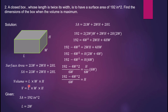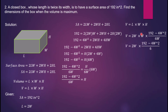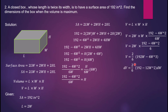Substitute the equivalent of H into the volume formula: V = 2W × W × (192 − 4W²)/(6W). Cancel one W: V = (2W/6)(192 − 4W²) = (2/6)(192W − 4W³). Differentiate with respect to W: DV/DW = (2/6)(192 − 12W²).